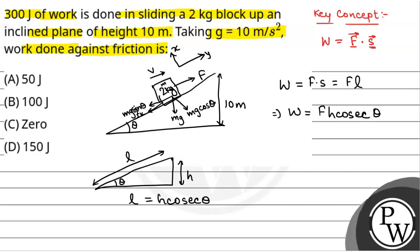Since the block slides up with constant velocity, the net force is zero. Summation of forces perpendicular to the incline equals zero, and summation of forces parallel to the incline equals zero. In the direction parallel to the incline we have: mg sin theta plus fk equals F, where fk is the kinetic friction.